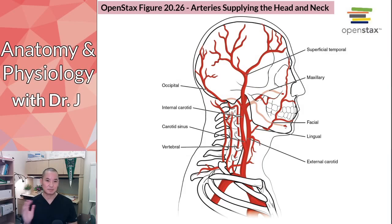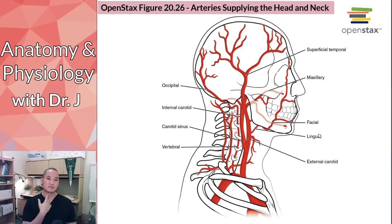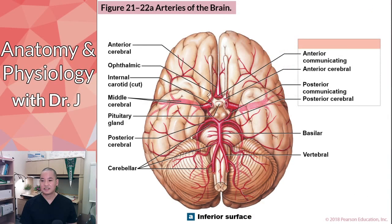Here is a more simplified view of head arteries — a list I can expect all of you to know. Notice that some are named after bones: maxillary, occipital — those sound like skull bones. Others use anatomical directions, like 'superficial temporal,' and some use landmarks like 'facial' for the face and 'lingual' for the tongue.